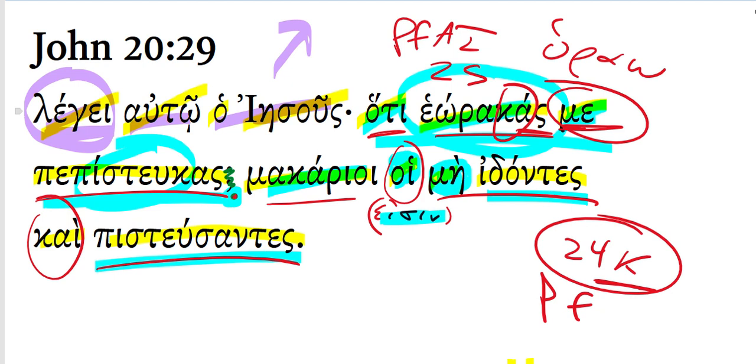I think Murray Harris is right in that this first participle here probably has a little bit of a gnomic sense to it. Blessed are those who don't see, who don't have the chance to see the resurrected Lord with their own eyes. And then there's probably a little bit of an aggressive sense to this second one, just looking at the context.